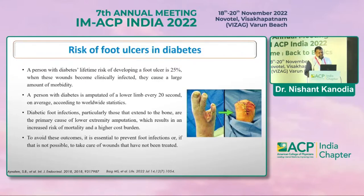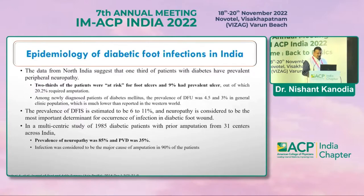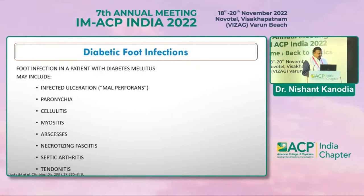Every 20 seconds, patients around the world are getting lower limb amputations because of foot ulcers. Diabetic foot ulcers extending to the bone are the main cause of lower extremity amputations and are associated with increased mortality and morbidity with high cost burdens. From North India, one-third of diabetic patients have peripheral neuropathy, two-thirds are at risk of ulcers, and nine percent have prevalent ulcers, of which 20 percent require amputation. The prevalence of diabetic foot infections is estimated at six to eleven percent, and neuropathy is considered the most important determinant.